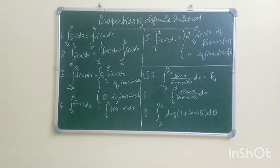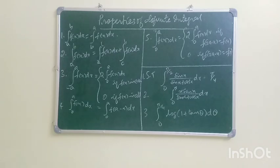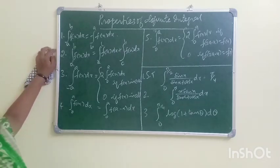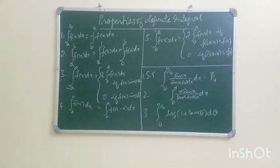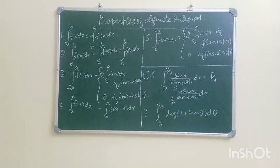Now we will discuss the problems of this. There are problems available in every property. Let's talk about the fourth property. We are familiar with what is definite integral. If there is a definite integral and we are not aware of the limits, it is still a definite integral. This is the property of definite integral.